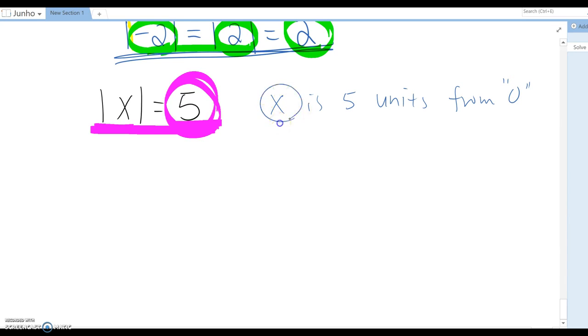We know x can be either plus five or minus five. Plus five and minus five both are five units from the zero. So in this case, x equals five or negative five.